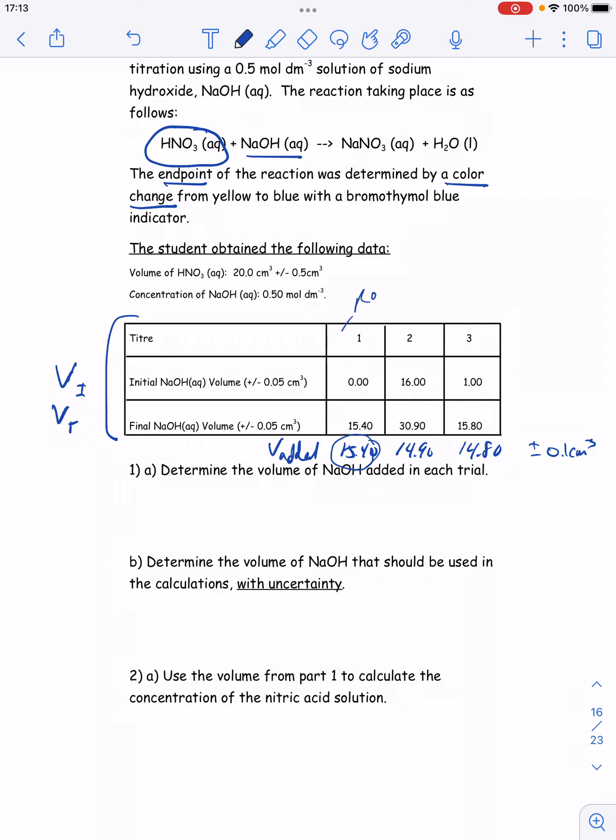This first trial is often kind of a throwaway. It's useful—we do it to help narrow in on the endpoint—but often because it's our first trial and we don't know when the color is going to change, it's usually the most inaccurate. So I'm actually not going to use this one in my calculations.